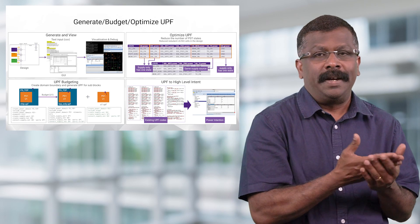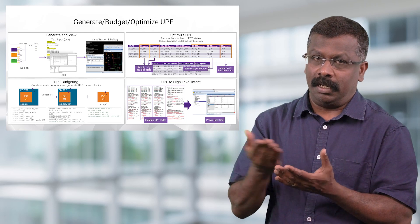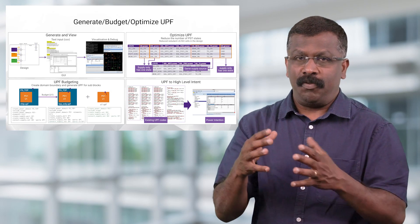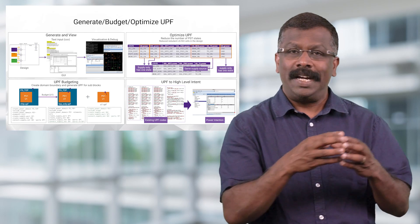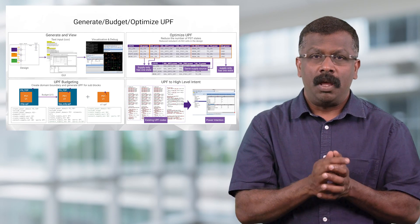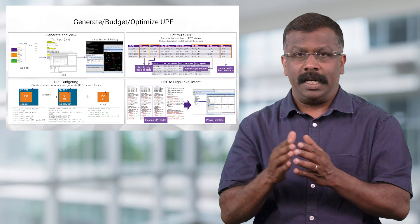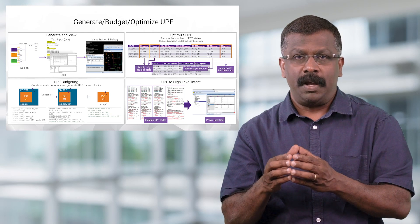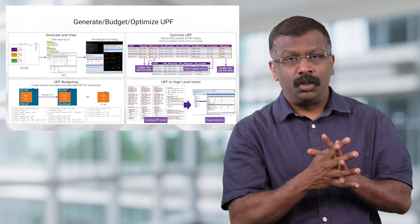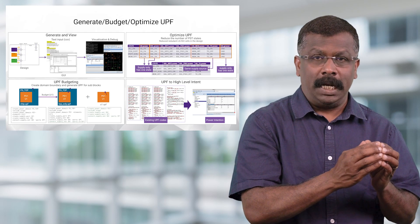One of the typical requirements for any design is budgeting. UPF Architect can budget the UPF for each sub-block and generate IP level UPF from a top level intent. It can also convert an existing legacy UPF back to high level format such as CSV, so that the intent is all maintained in one place.